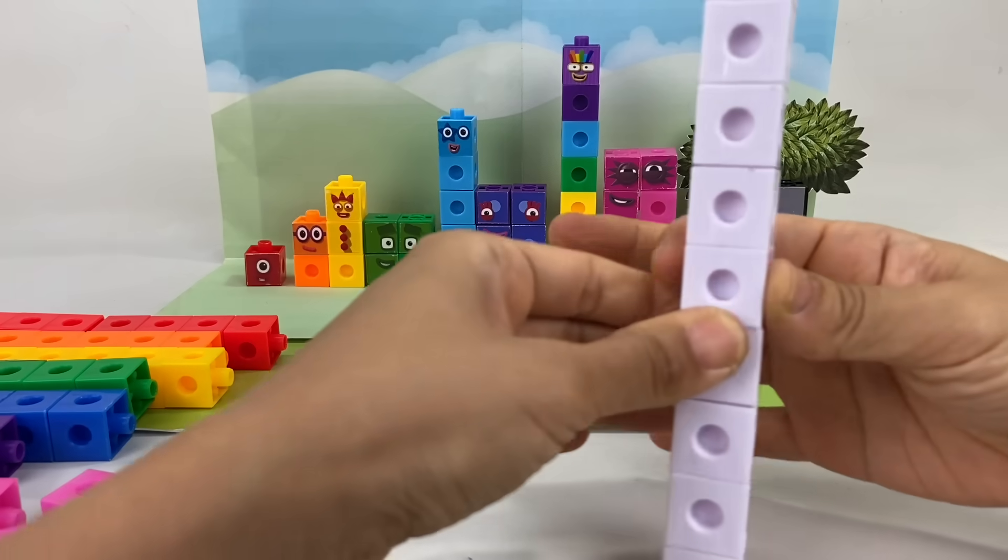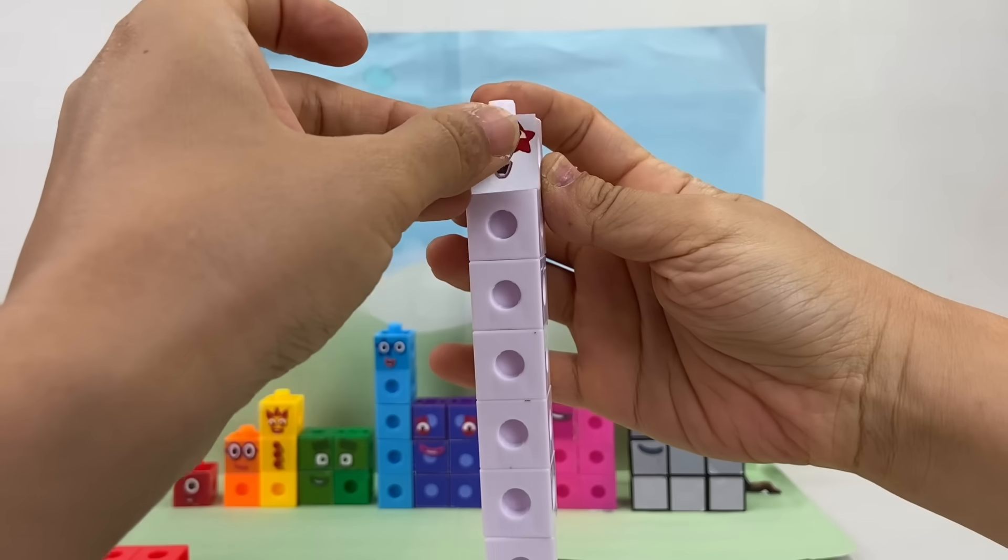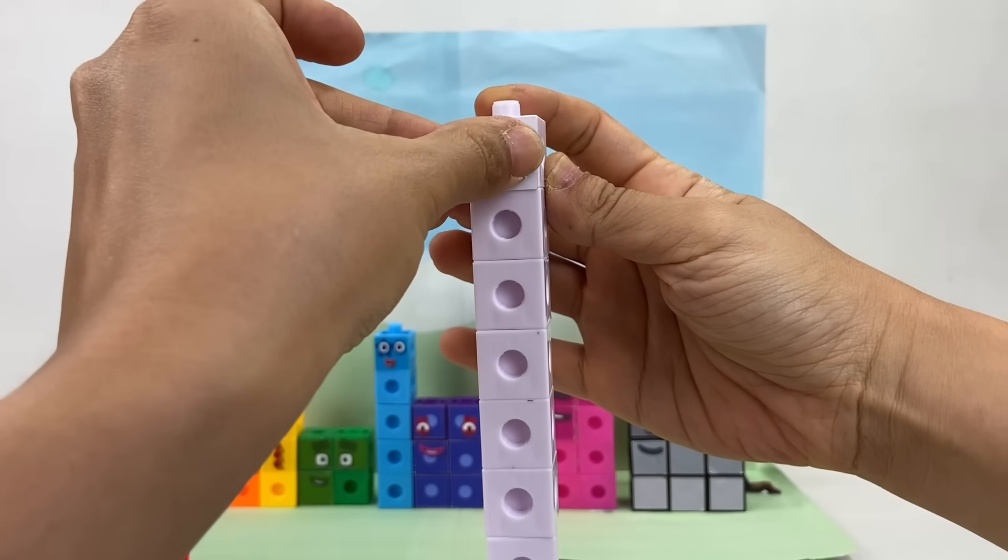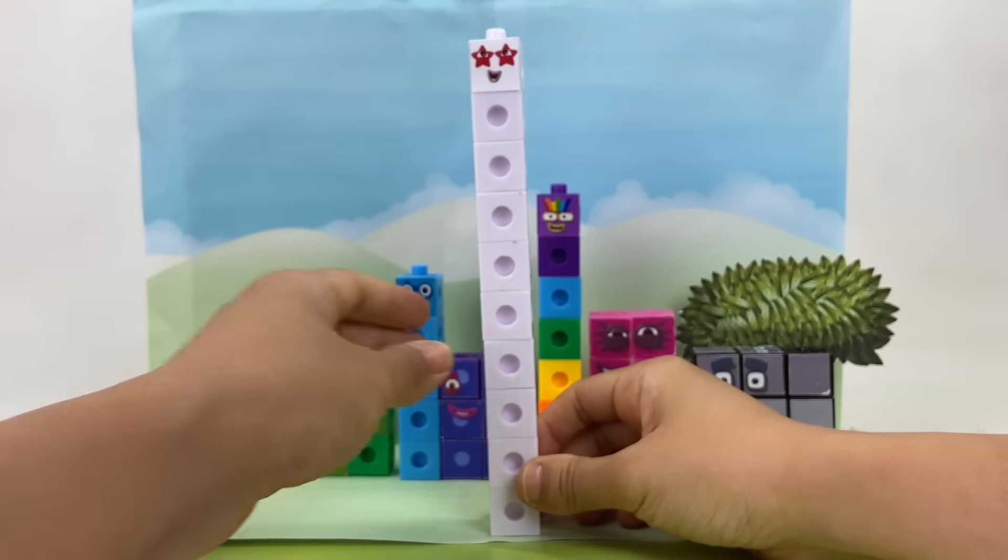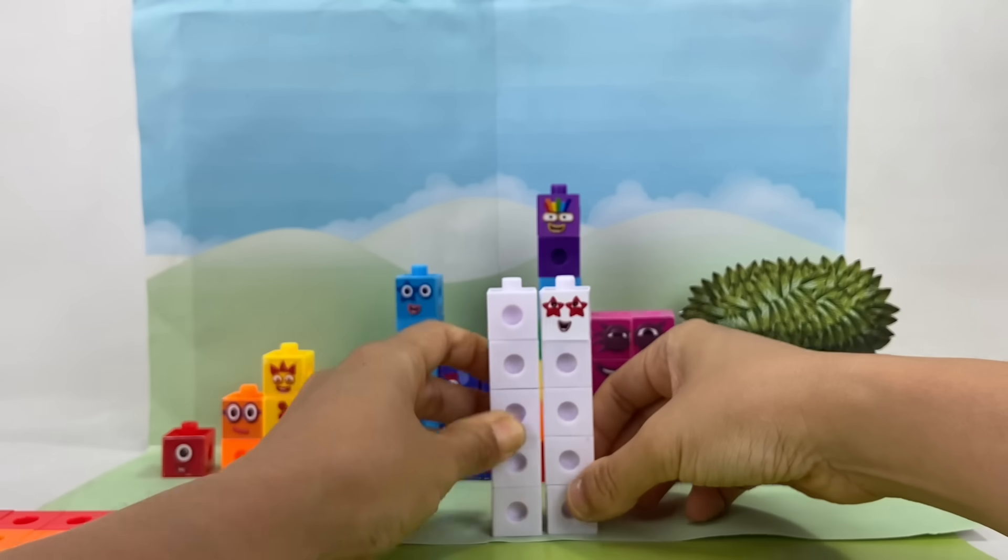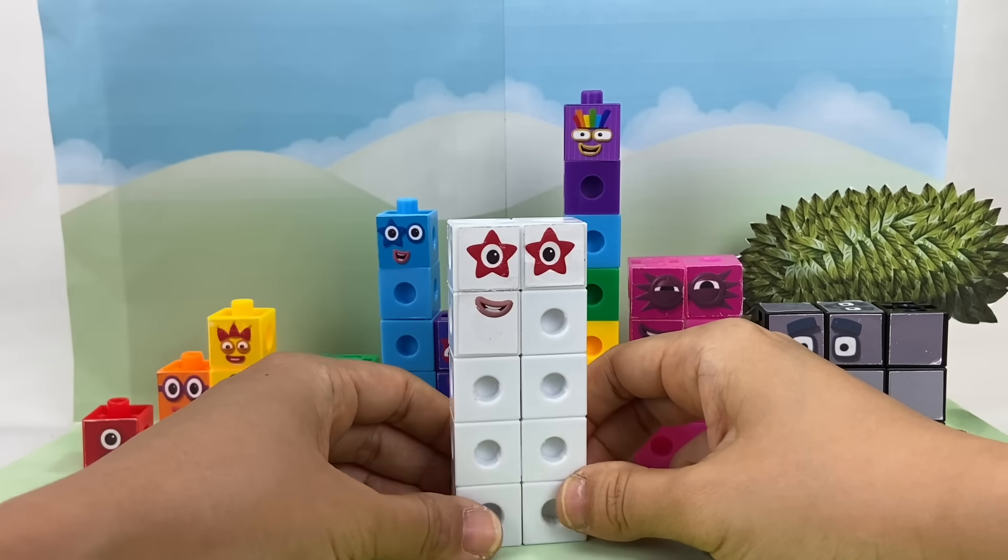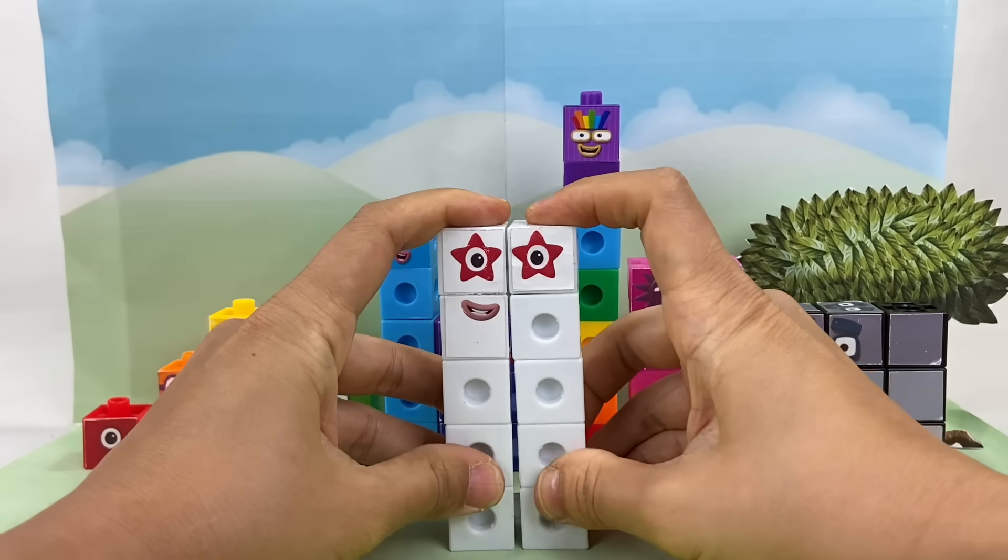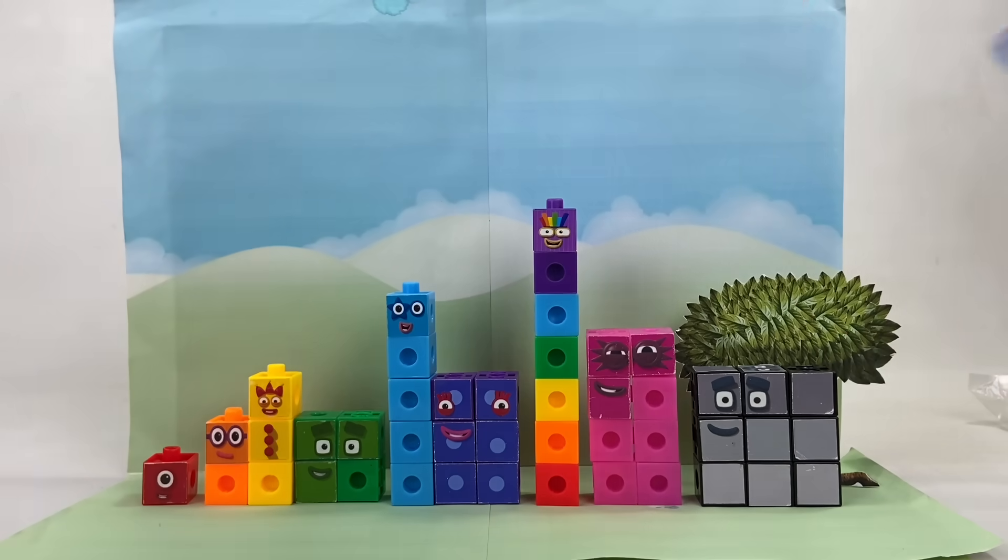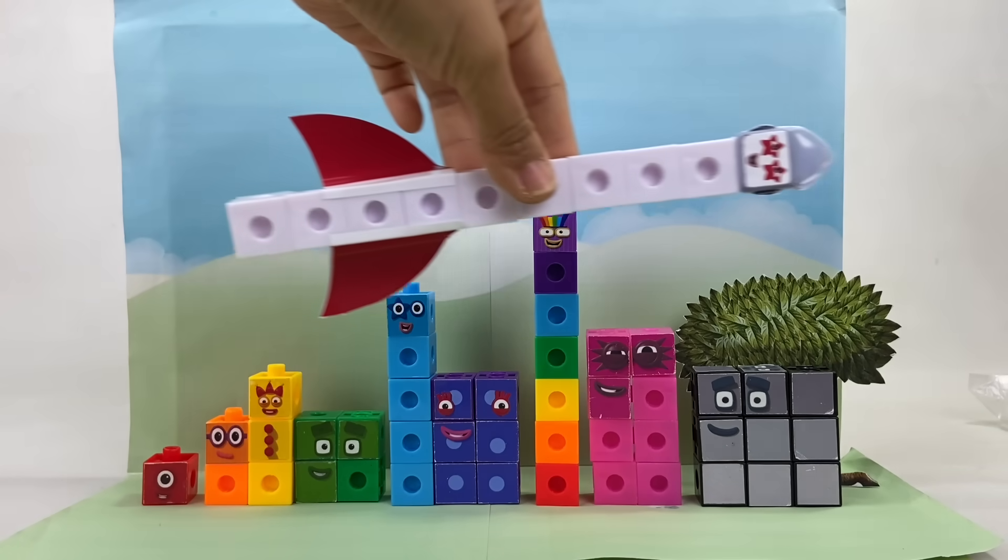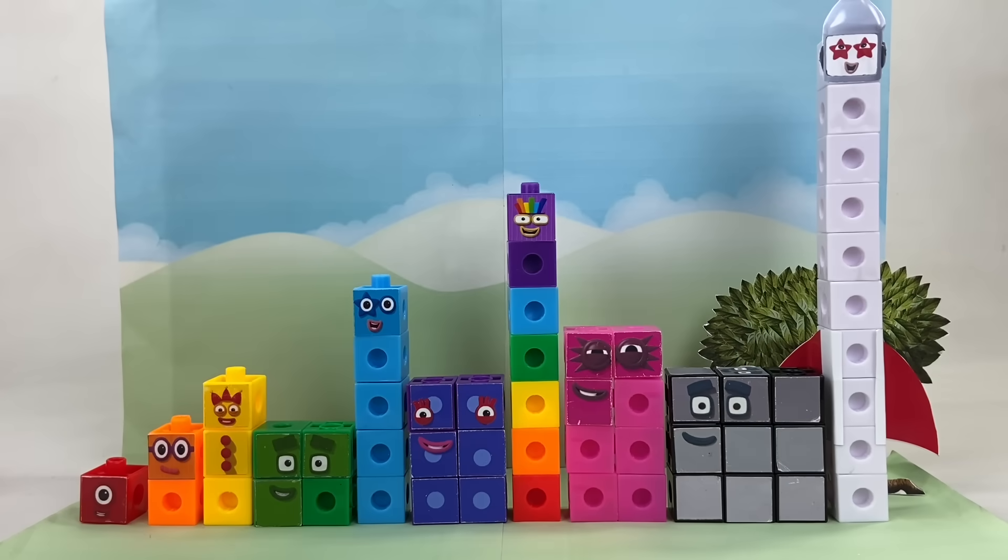And of course, the Numberblocks wouldn't be complete without this next one! Numberblock ten! She's made up of ten white blocks with a red border! And she has two star-shaped eyes! Ten! I am ten! Say it again! I am ten! Watch this! Ten! Nine! Eight! Seven! Six! Five! Four! Three! Two! One! Blast off! So those are Numberblocks 1 to 10 using Snapcubes!